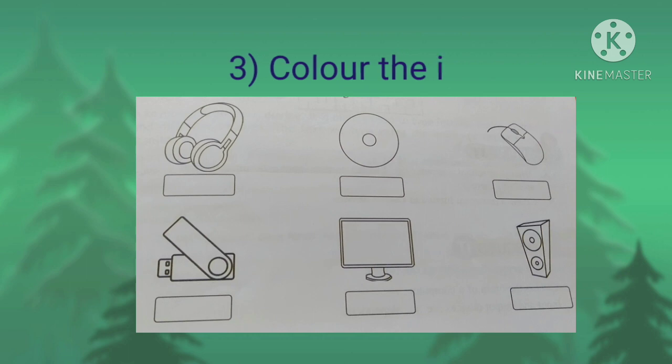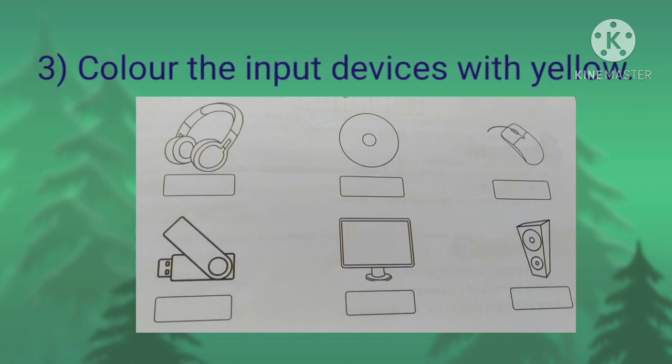Now number 3: color the input devices with yellow. Children, you have to identify the input devices from these 6 pictures given. So you can see that mouse is the only input device given here. I am putting a circle around the mouse. You can color the mouse with yellow.